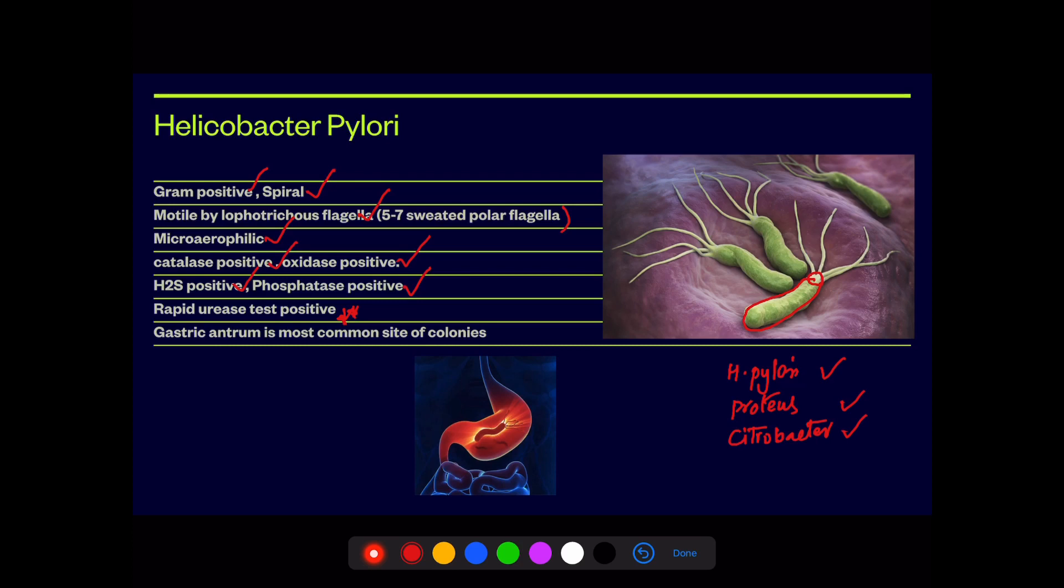Apart from that, it is most commonly habitated in your gastric mucosa, and the most common site of occurrence of multiple colonies is gastric antrum. Basically, the points to be added are initially this bacteria will enter into the body. After an incubation period, it's going to cause mild acute gastritis.